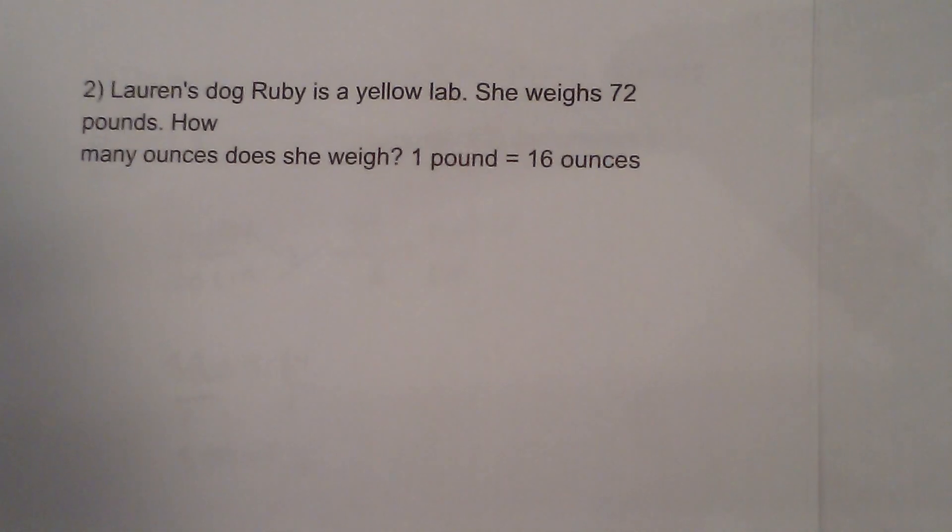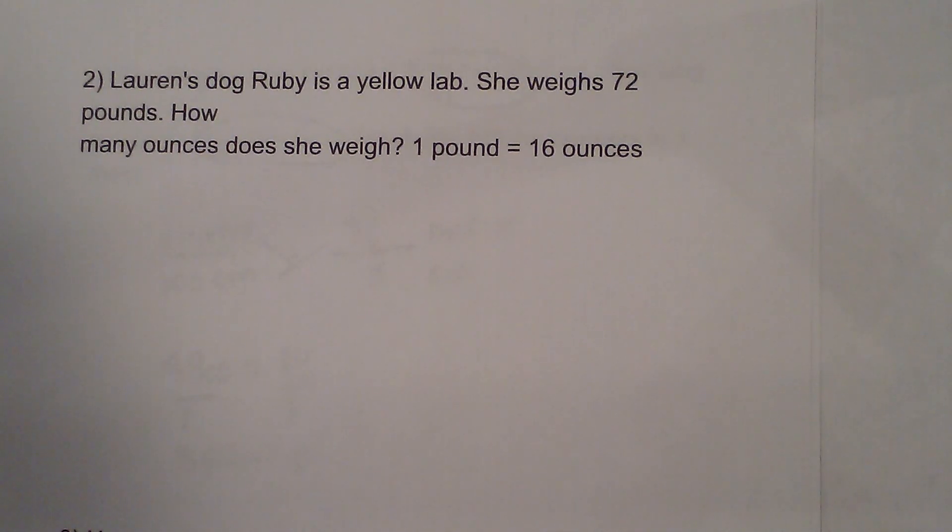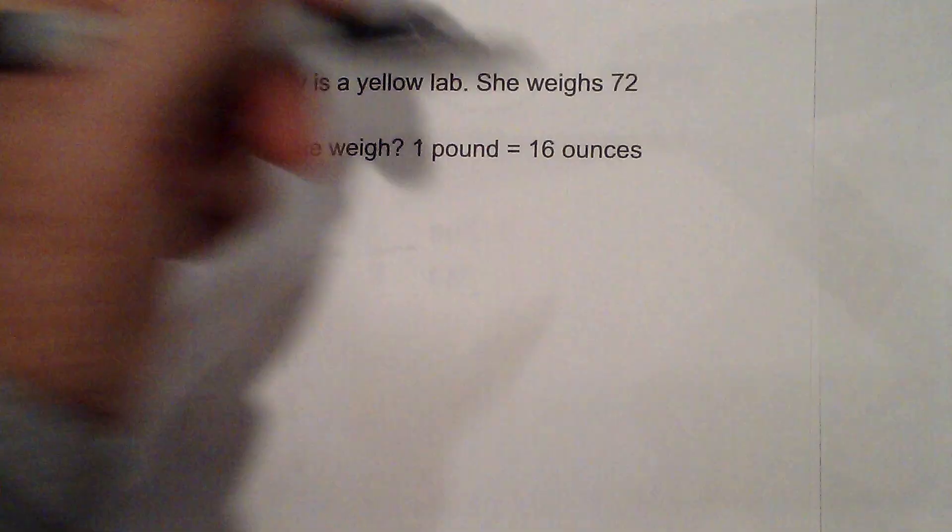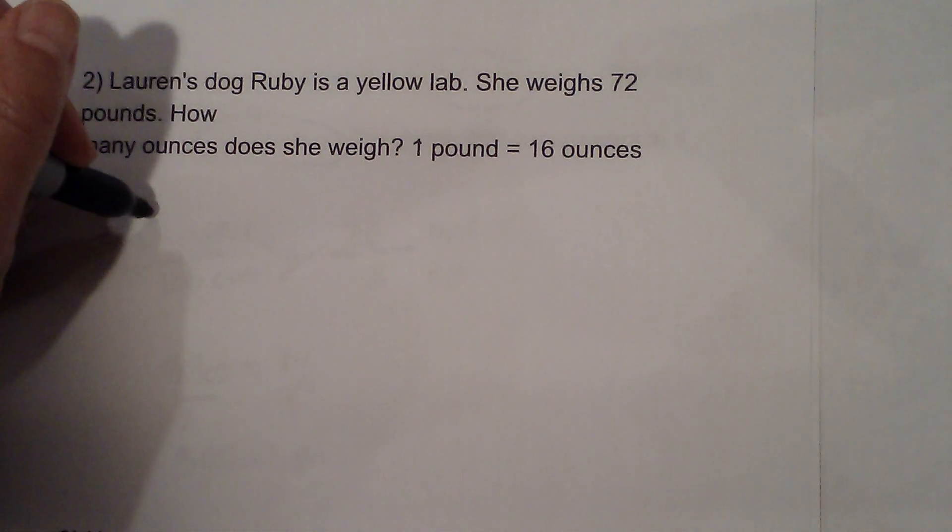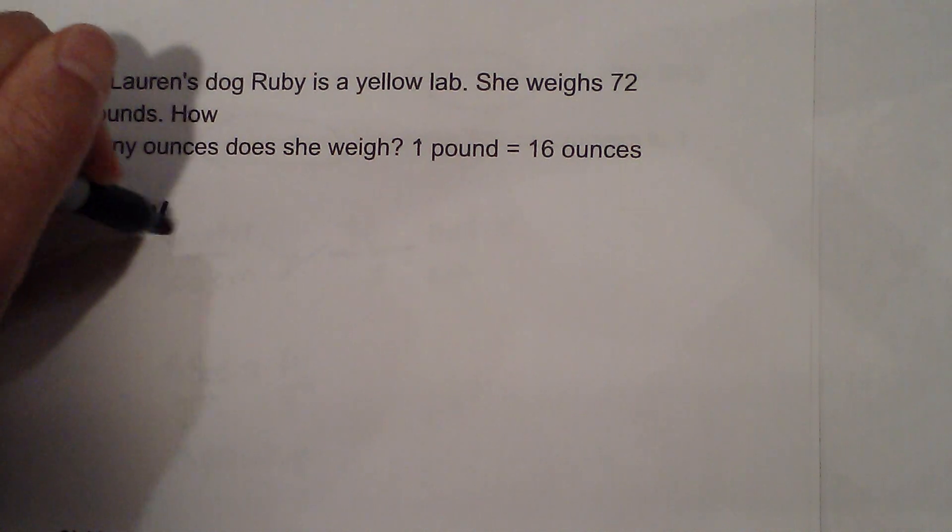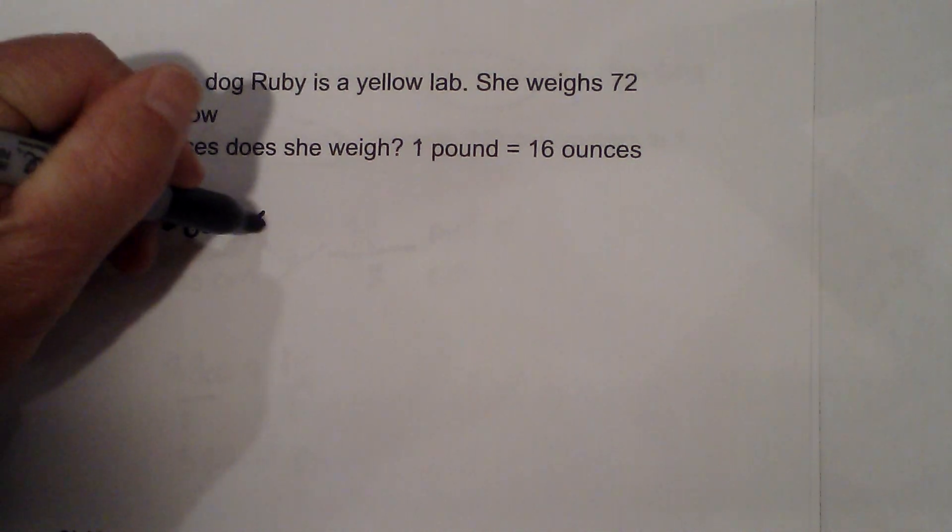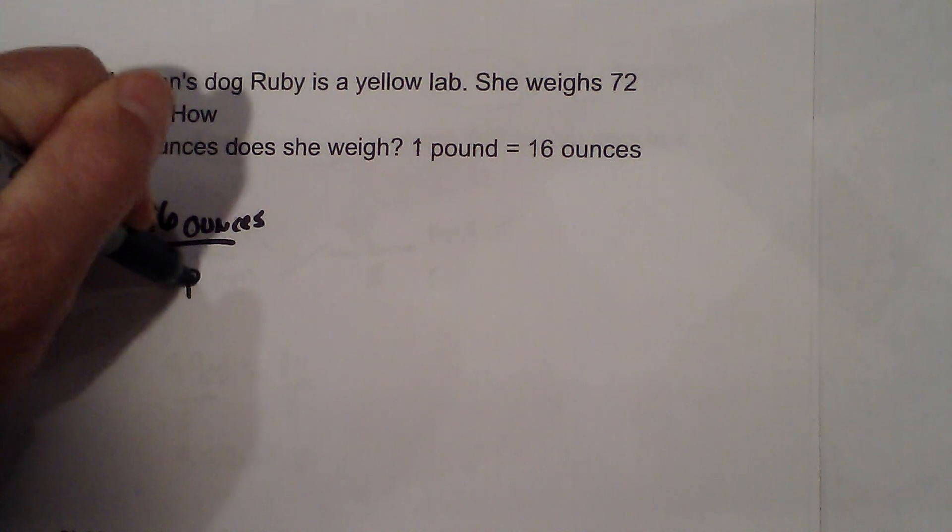It says that Lauren's dog Ruby is a yellow lab. She weighs 72 pounds. How many ounces does she weigh? And one pound is equal to 16 ounces. So I'm going to put this time I'll put 16 ounces on top is equal to 1 pound.